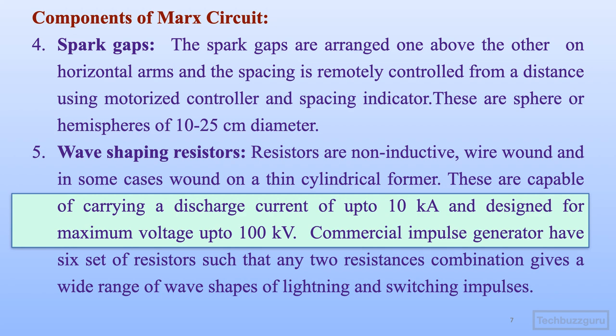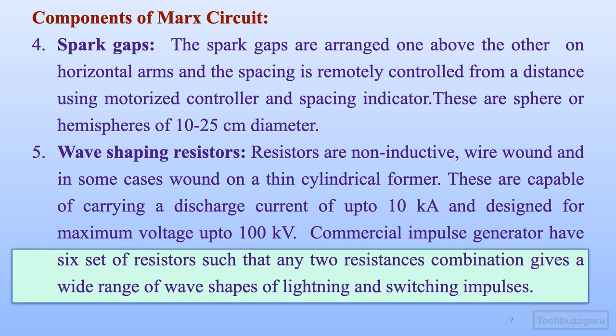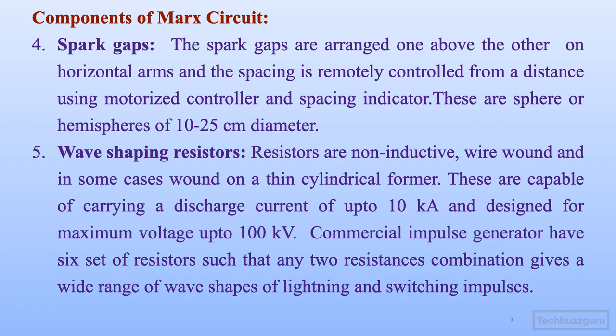Commercial impulse generators have six sets of resistors such that any two-resistor combination gives a wide range of wave shapes of lightning and switching impulses. Impulse voltages are basically of two types: lightning impulse voltages and switching impulse voltages. The same circuit can be used for generating either type of pulse by using a set of resistors instead of only two resistors R1 and R2.